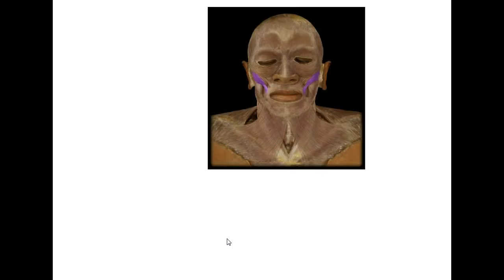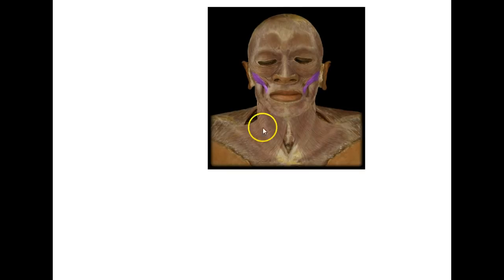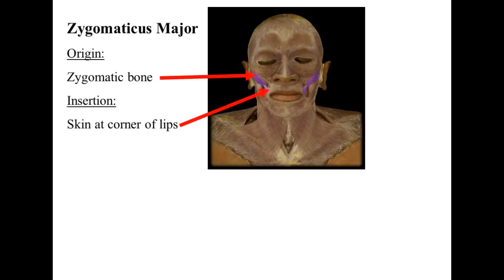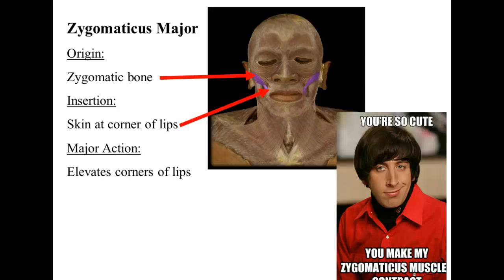Next we have a muscle that attaches to the zygomatic bone — your cheekbone — and then down at the corner of the lips, right at the edge of the orbicularis oris. What this muscle does is draw the corner of the lips upward towards the origin on the zygomatic bone, and what you get is a smile. This muscle is known as the zygomaticus major. Origin on the zygomatic bone, insertion at the skin at the corner of the lips, and we get an elevation of the corner of the lips.